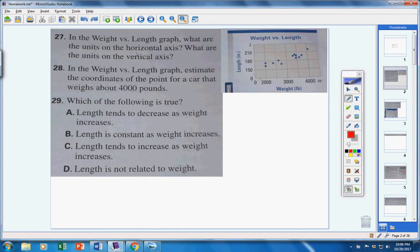If you look carefully, we have weight of a vehicle versus length of a vehicle. Here's the weight going across, here's the length right here. What are the units on the horizontal axis? The units on the horizontal axis would be weight in pounds.